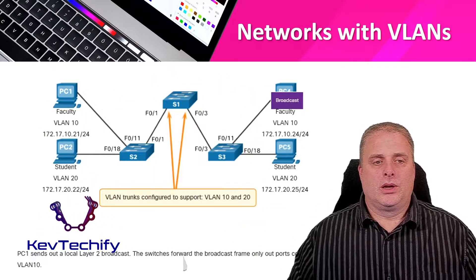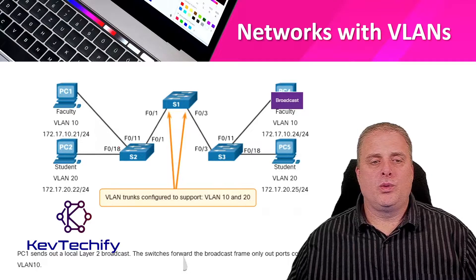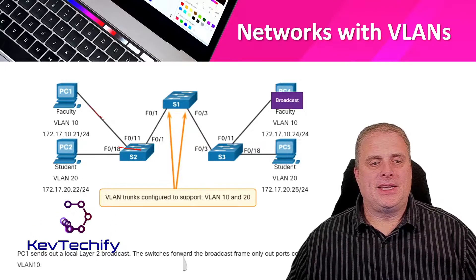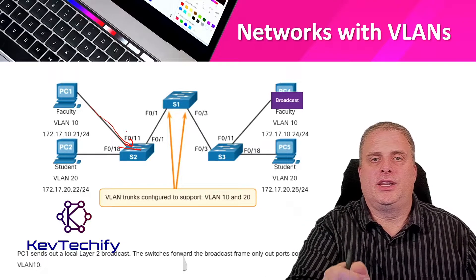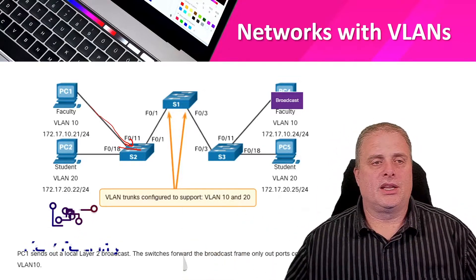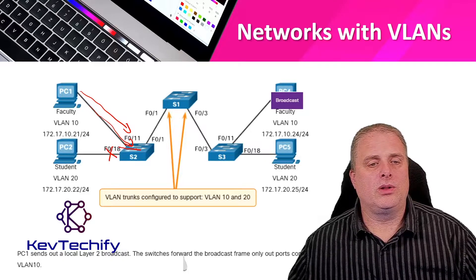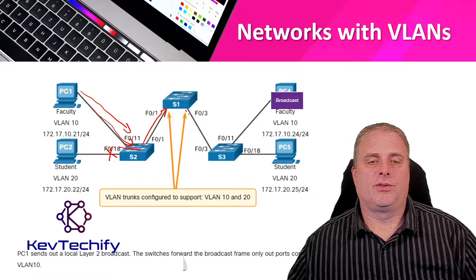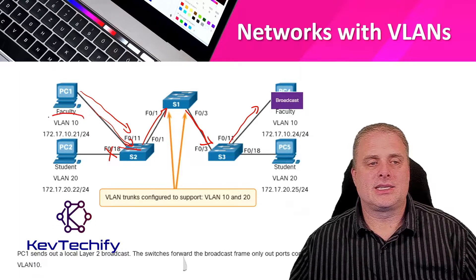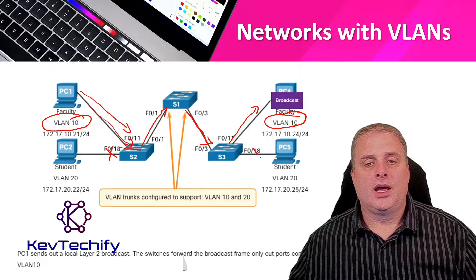When we use VLANs on our networks, it creates virtual LANs. Think of it almost as a virtual switch — we take part of our switch and segment it off for a specific local area network. We plug PCs into ports we've segmented for a specific VLAN. When PC1 sends a broadcast, because PC2 is on a different VLAN, the switch doesn't forward it there. It sends it across the trunk to Switch 1, which forwards it to Switch 3, and Switch 3 only sends it to PC4 because PC4 is on the same VLAN 10.